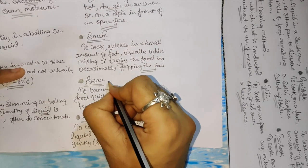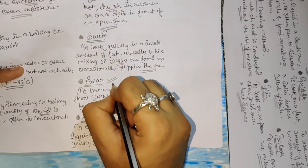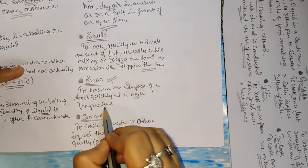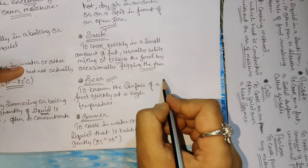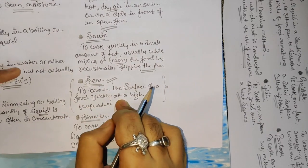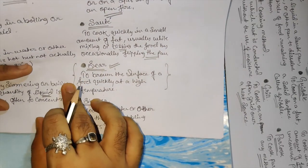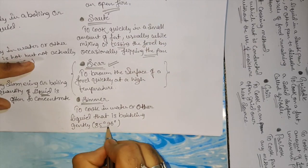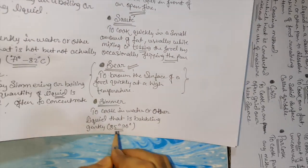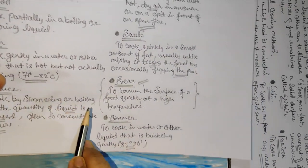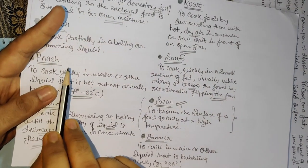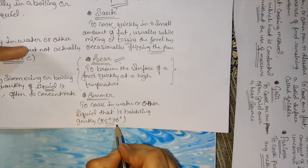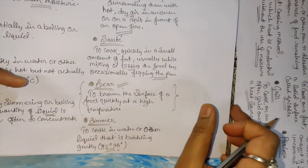Sear - this is important, to brown the surface of food quickly at high temperature. I will explain this in the science way in upcoming videos. Simmer - to cook in water or other liquid that is bubbling gently, 85 to 96 Celsius, a little bit more than poach and near to boiling temperature at 100 degrees.